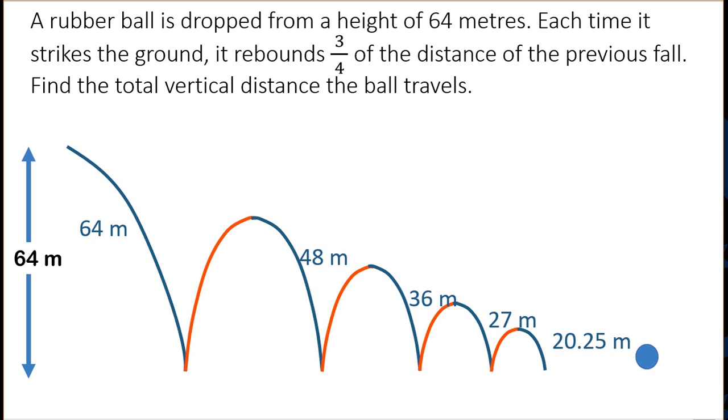Now the total downwards motion, and I'm only looking at the vertical distance, forms a geometric sequence where A, the first term, is 64 and R is three-quarters.